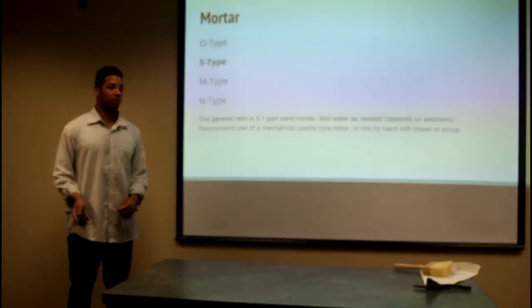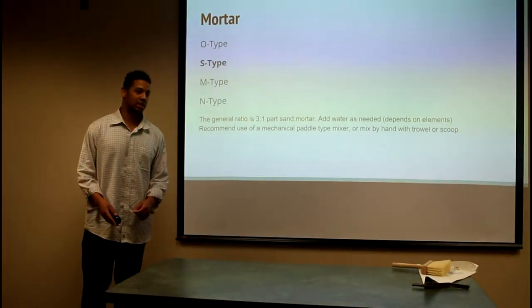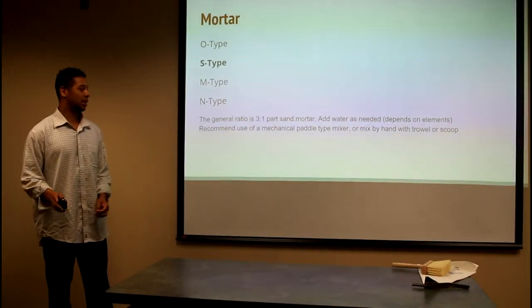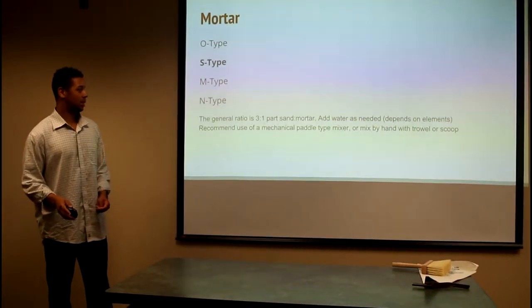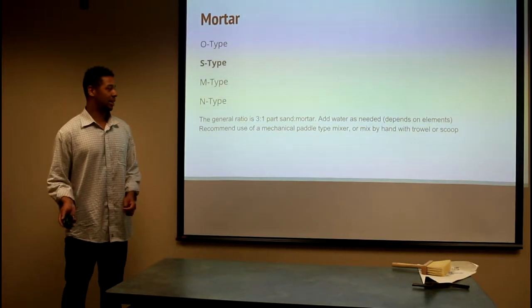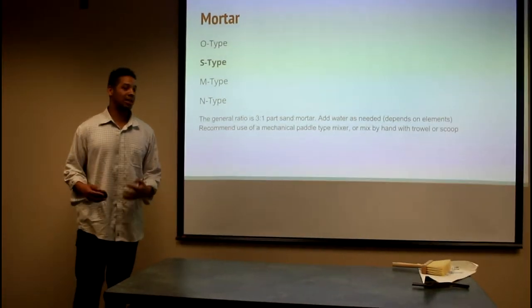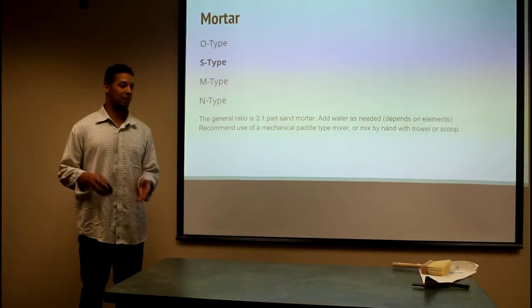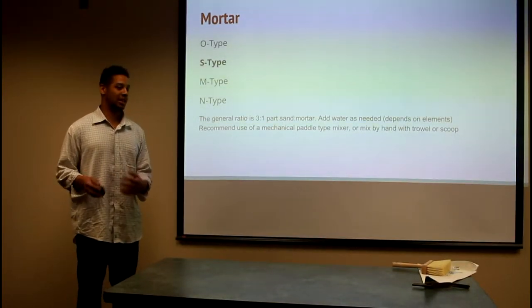Now, there are different types of mortar. It's very important to know as a mason. There are O-type, S-type, M-type, and N-type. The general ratio is about three-part sand and one-part mortar. Nowadays, you can get pre-mixed mortar where the Portland cement and lime are already mixed together. All you need to do is add sand and water.